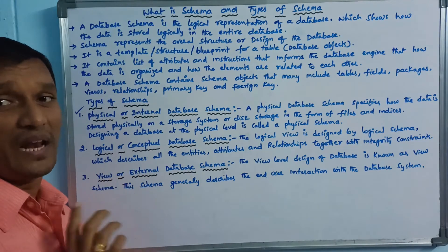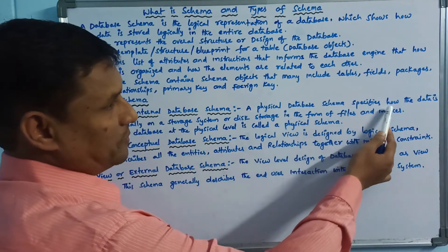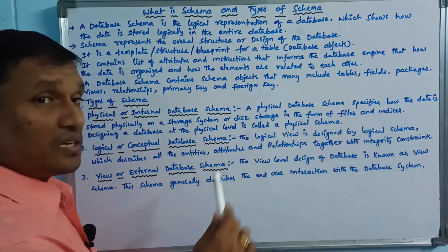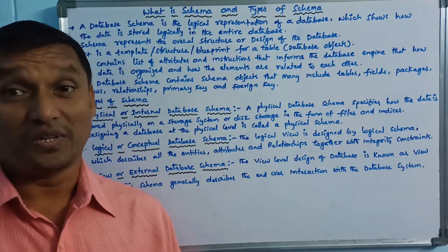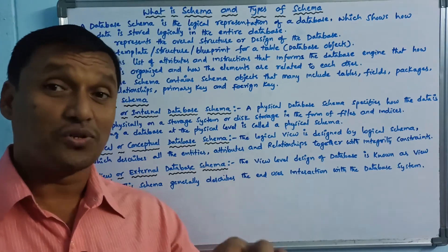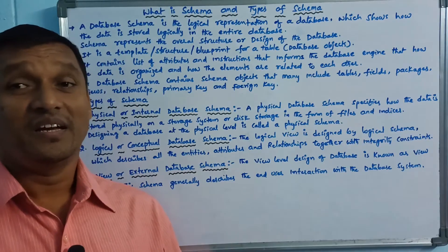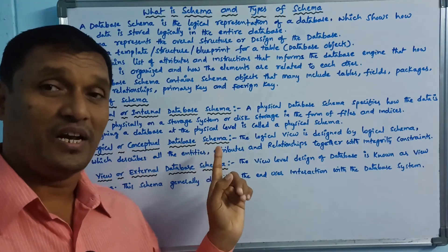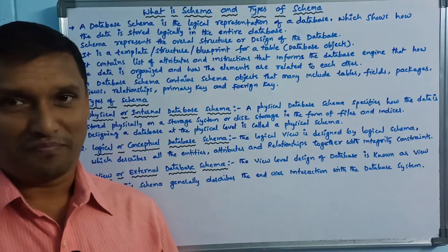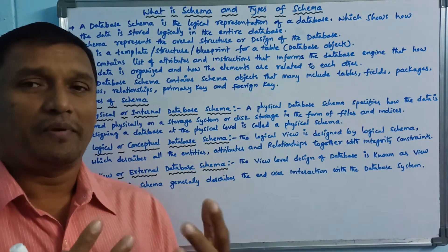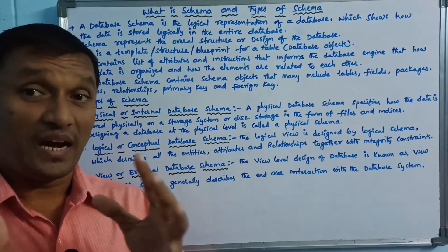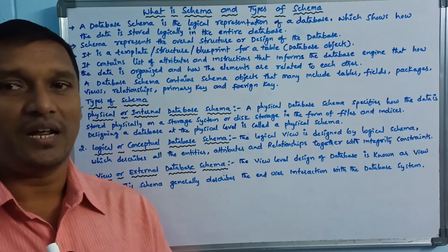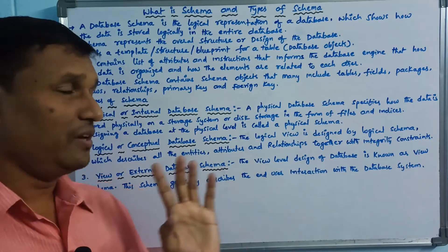At the physical level, a physical database schema specifies how the data is stored physically — in a storage system or disk storage in the form of files or indices. So, what is the physical database schema? It describes how you store the data physically.